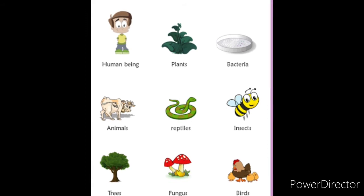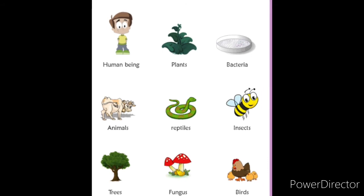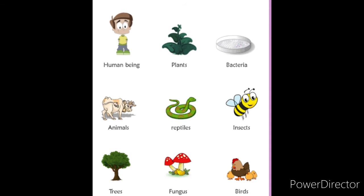Trees. All trees are examples of living things. Animals. All animals are examples of living things.